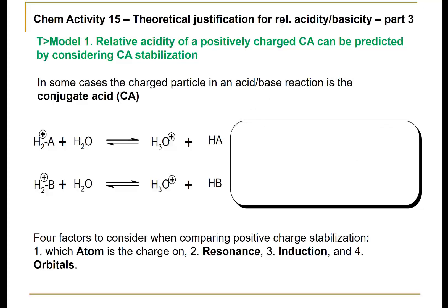Here we have a general example comparing two different acids, H2A+ and H2B+. Notice that in this case we're looking at a positively charged acid reacting with water. In both cases, hydronium ions are formed. However, the conjugate bases, HA and HB, are neutral.